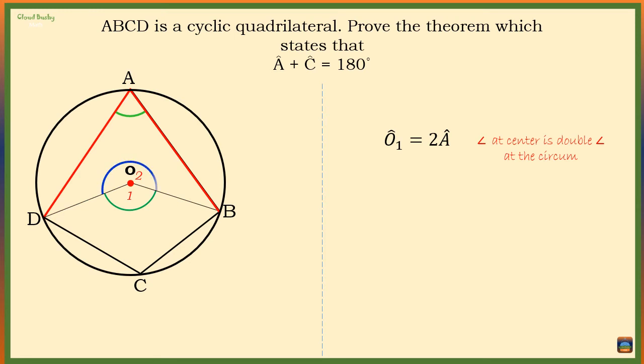Angle O2, which is also at the center of the circle, is subtended by the major arc BD. O2 is two times angle C, which is also subtended by the major arc BD. Now, angle O1 plus angle O2 should give us 360 degrees.